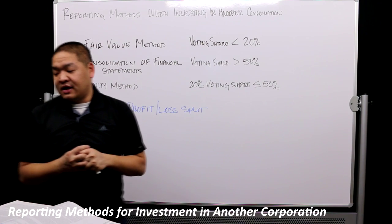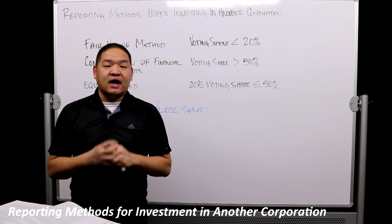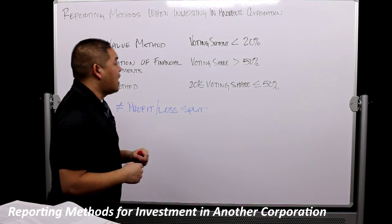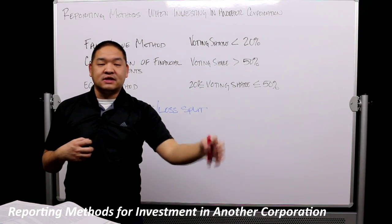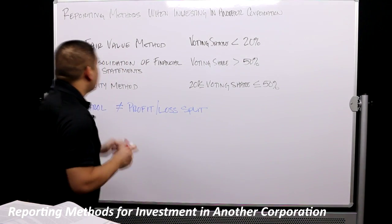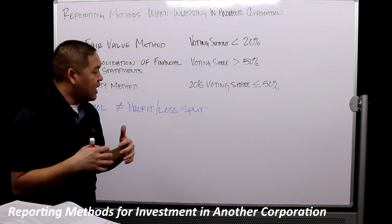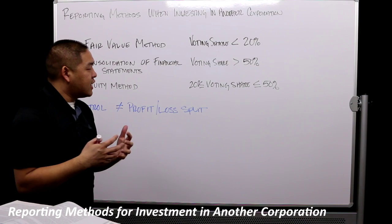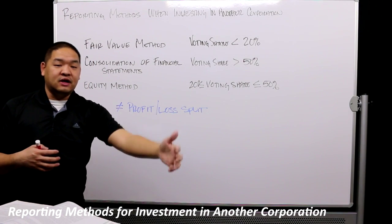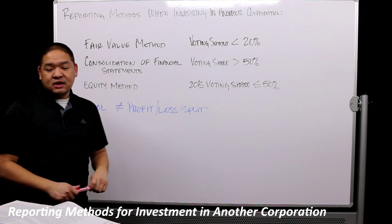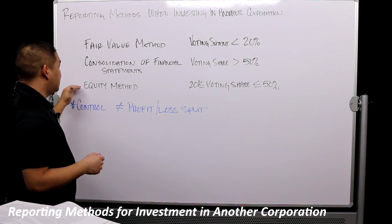Sixth, the extent of ownership by the investor relative to the size and concentration of other ownership interests in the investee — what percentage does the investor hold versus other investors. These are our three reporting methods for an investor's investment in an investee: fair value, consolidation, and equity method. In the next lesson, we'll go deeper into the equity method in particular.